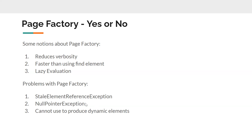Another claim is about lazy evaluation — Page Factory will only try to find the web element when it is needed, otherwise it just initializes and doesn't use it. But even with driver.findElement, I will only use it when I actually need it — I don't call findElement if I'm not going to use that element. So I don't understand how this is different. These three notions are really not true and do not bring you much value.